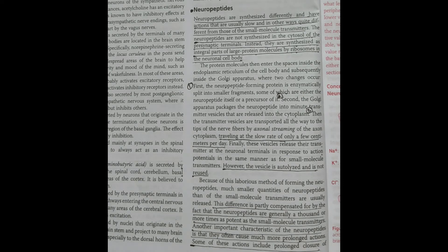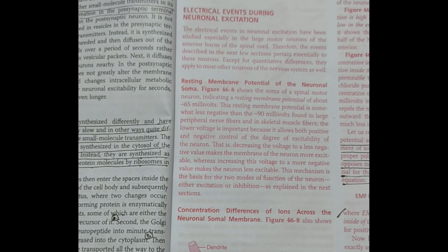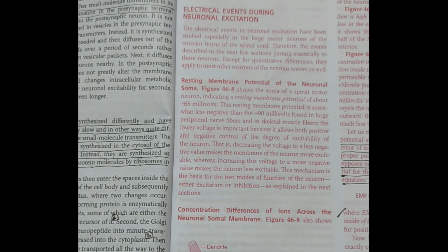The next topic is electrical events during neuronal excitation. A subheading is resting membrane potential of neuronal soma. The normal resting potential shown in the figure is minus 65 millivolts — very important to memorize, as it is the basis for further discussion. In the graph, three ions are considered: sodium, potassium, and chloride, with concentrations different on the inside versus outside of the neuronal soma.